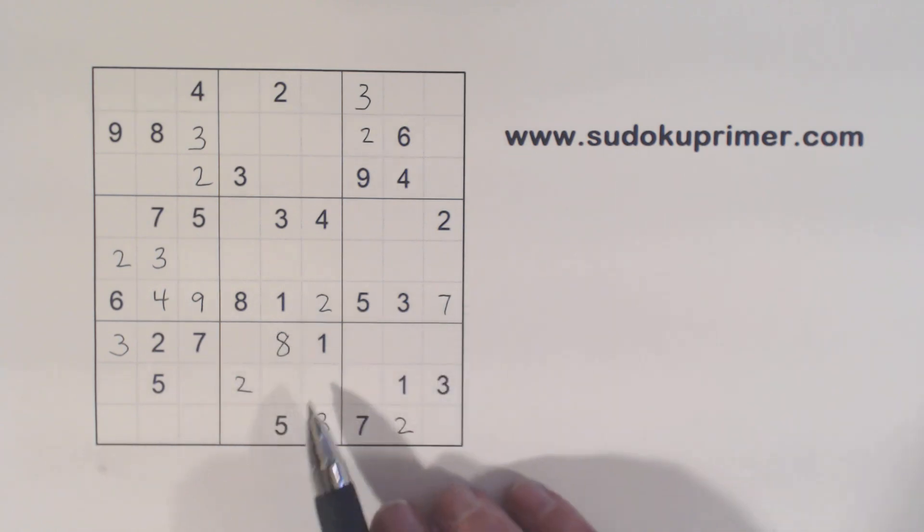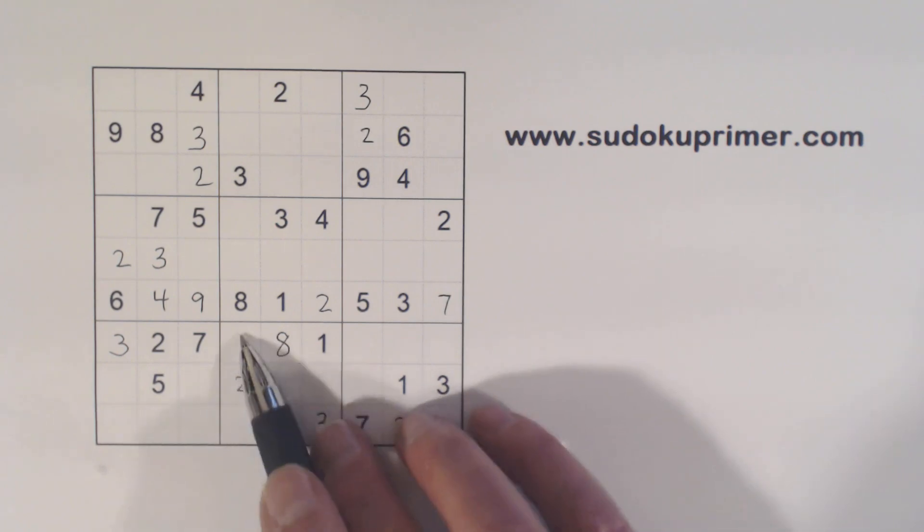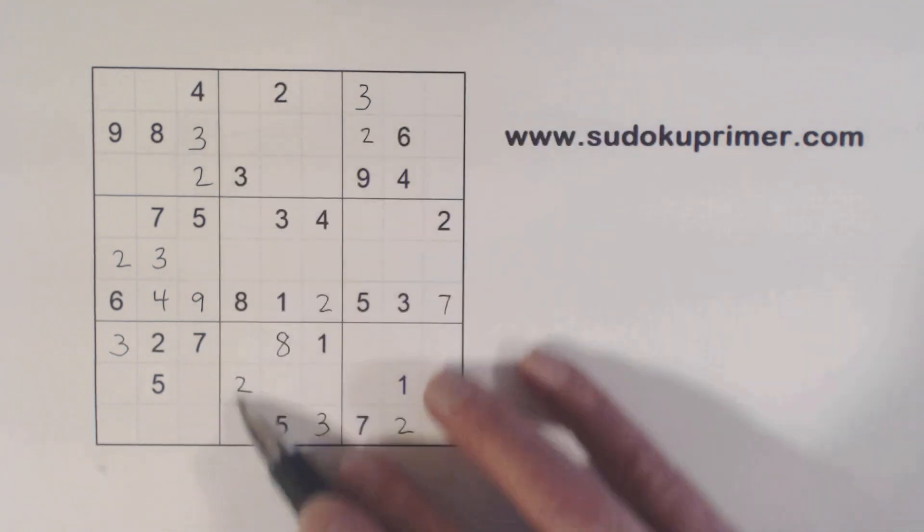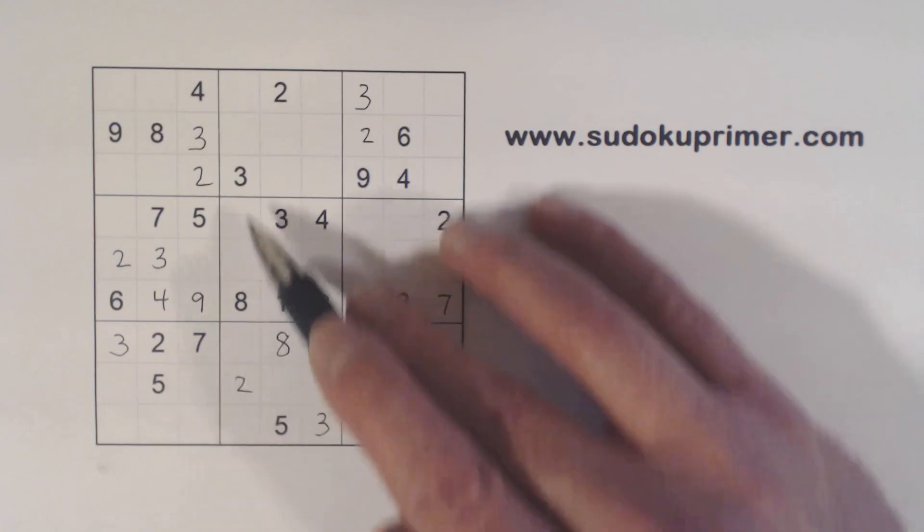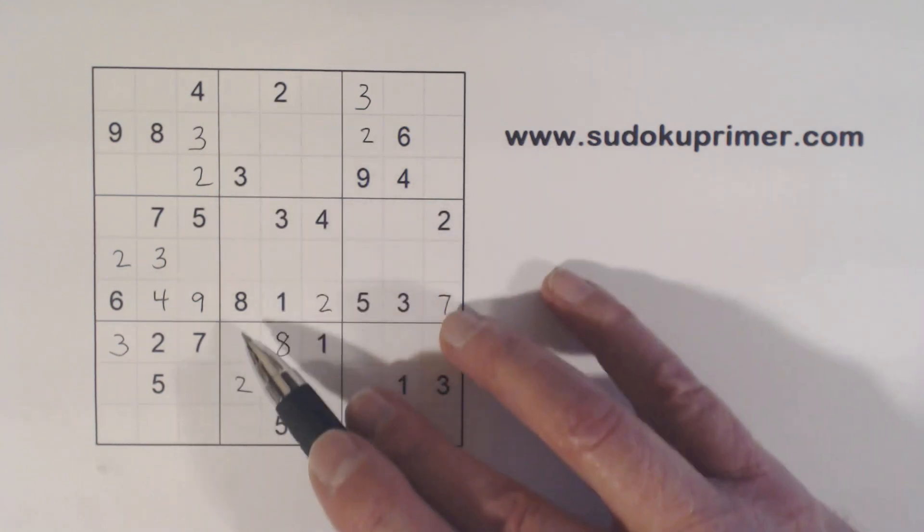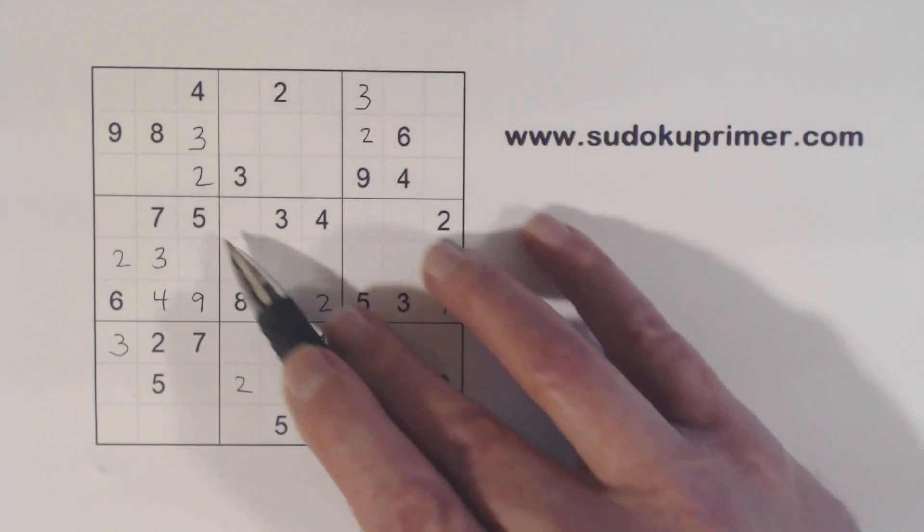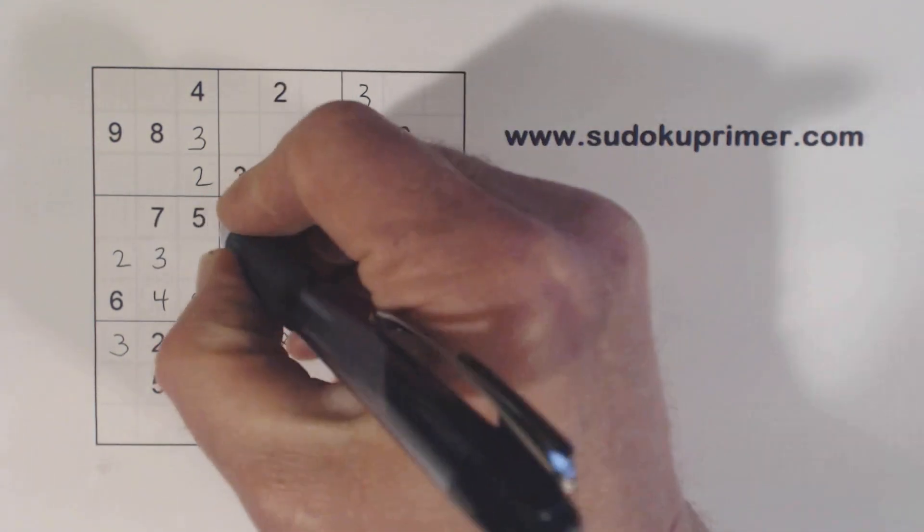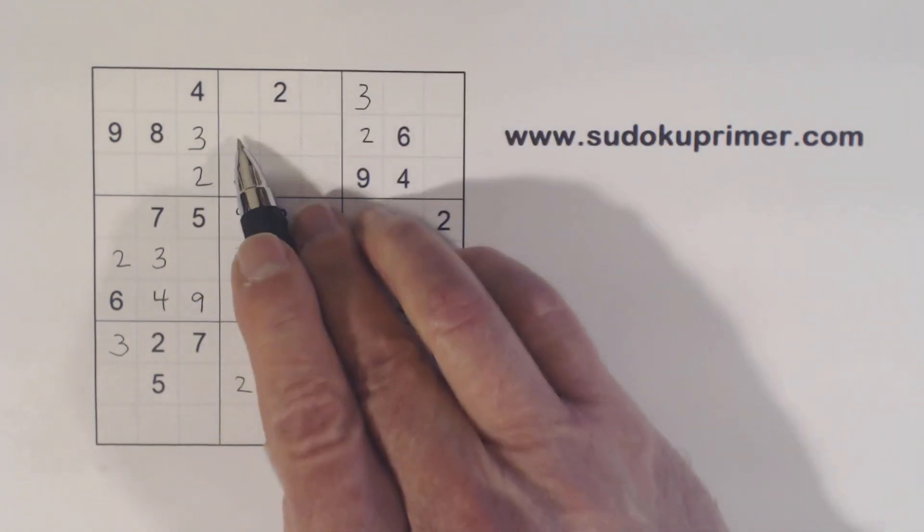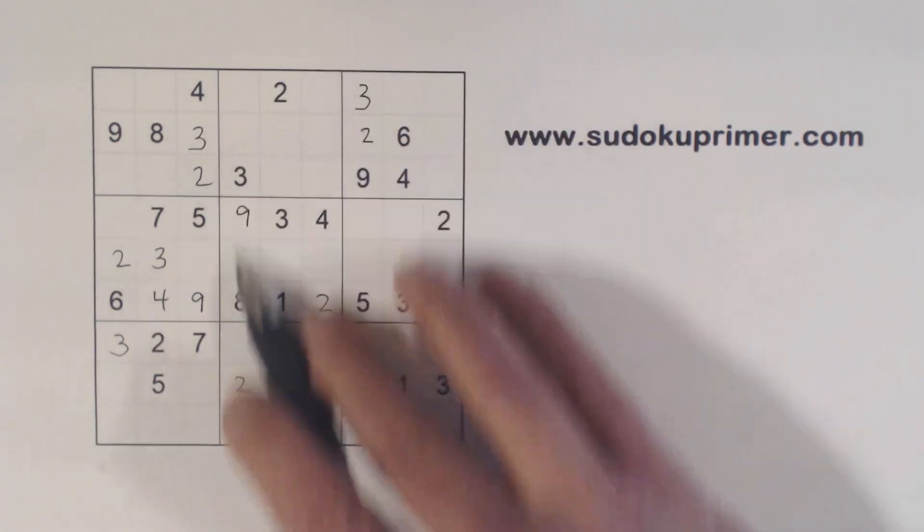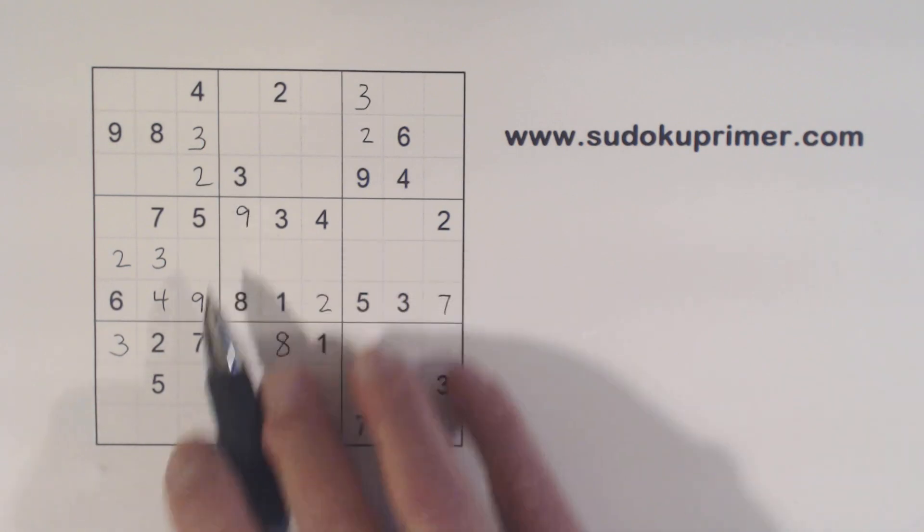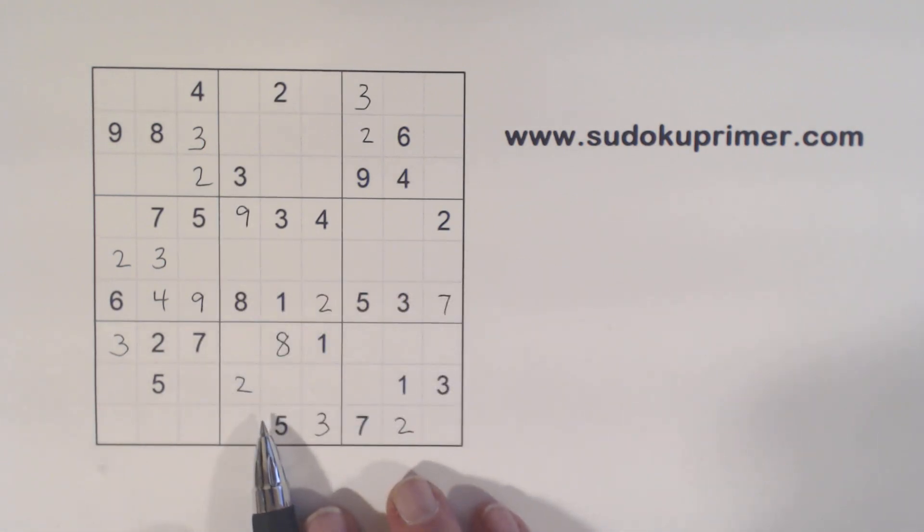And now we know these are 7, 9 twins, so these are 4, 6 twins. And let's see what we're missing here: 1, 3, 4, 5, 6, 7, 9. That's 1, 5, 7, and 9. Here's a 1, 5, and 7, so that's a 9. That's a 5 or 7, but we can't solve those yet, but we found a 9 there.